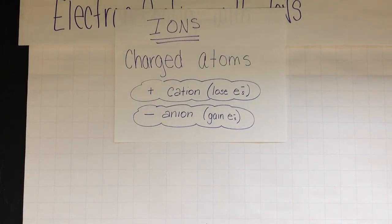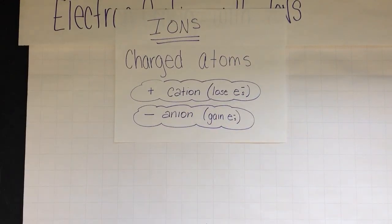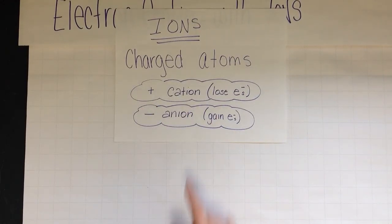They're atoms that now have a charge, and they got this charge because they either gained or lost electrons. Remember, if you lose electrons you're a cation, positive, and if you gain electrons you're an anion, negative.